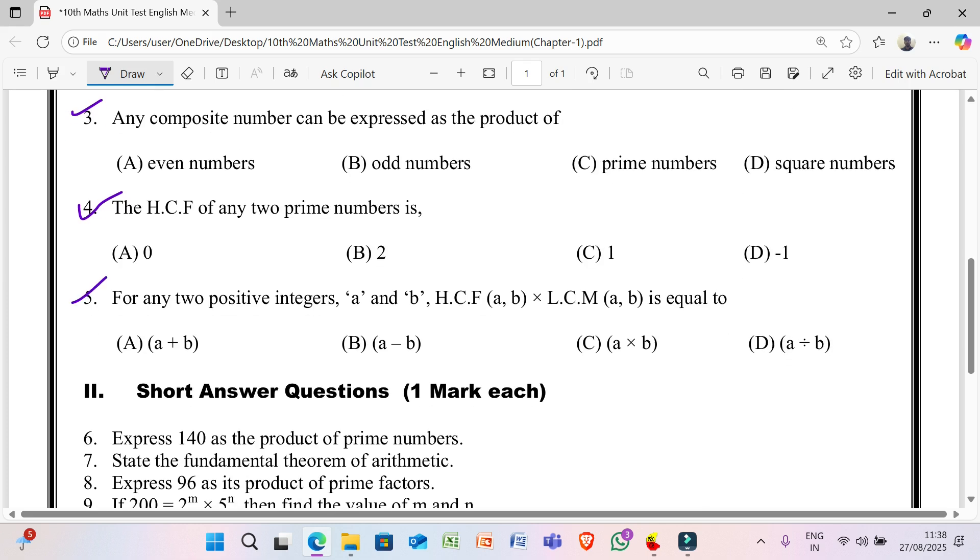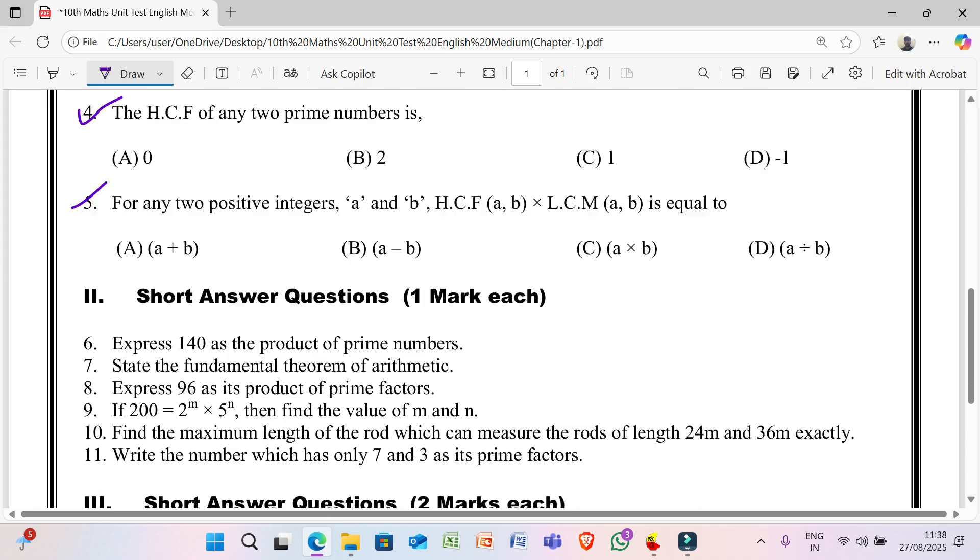5th question: for any 2 positive integers 'a' and 'b', H.C.F (a, b) × L.C.M (a, b) is equal to A) a + b, B) a - b, C) a × b, D) a ÷ b